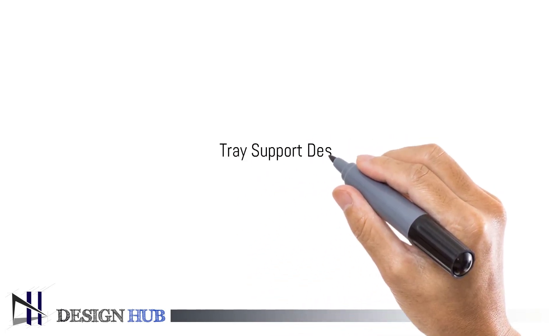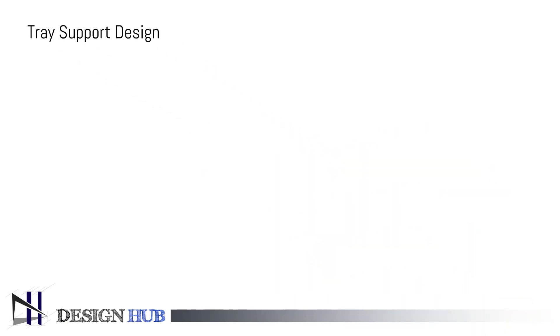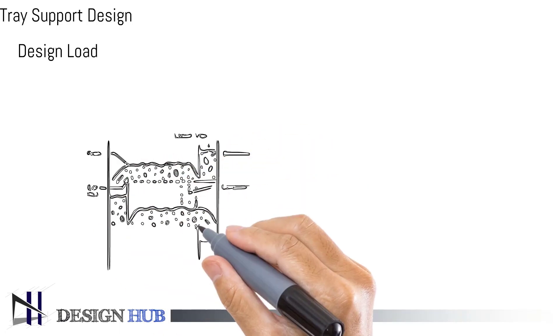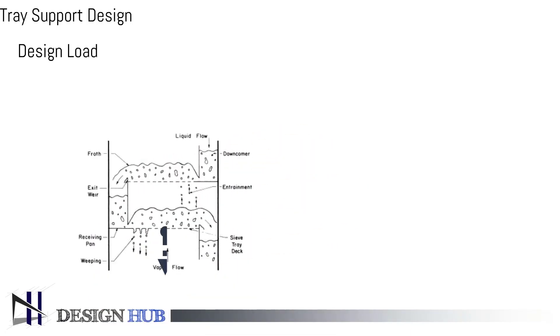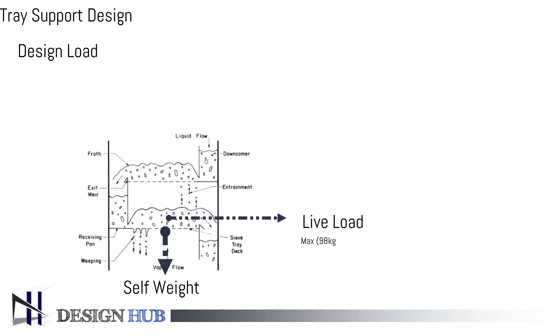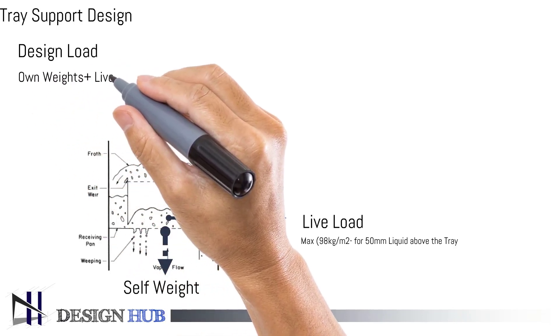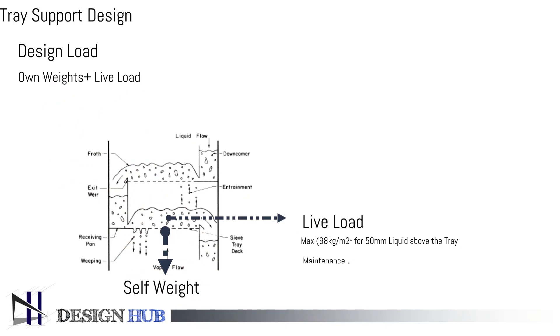Further, let us see the tray support design. The design load of tray support is equal to the weight of the tray and the weight of the fluid. You can see in the figure how loads work. The maximum live load is 98 kilograms per meter square for 50 millimeters of liquid above the tray. Whereas, the maintenance load is 135 kilograms on any point of the tray assembly.